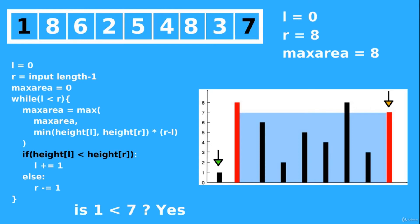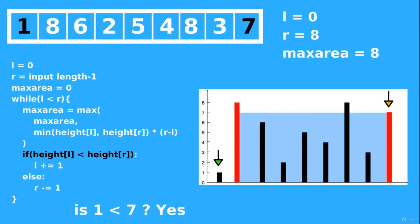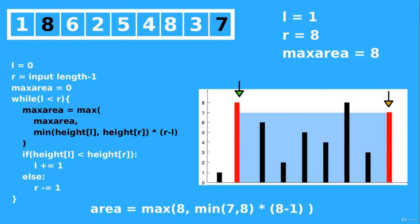Next we decide which pointer to move. We move the pointer pointing to the smaller building. The height at the right pointer is bigger than at the left pointer, so we keep the right pointer and move the left pointer to the right.